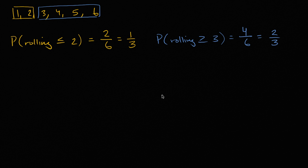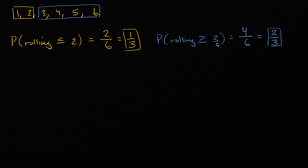So what's more likely — rolling a number less than or equal to two, or rolling a number greater than or equal to three? You can see it right here: the probability of rolling greater than or equal to three is two-thirds, while the probability of rolling less than or equal to two is only one-third. Two-thirds is twice one-third, so you're twice as likely to roll a number greater than or equal to three. You can also see that directly: four possibilities versus two.